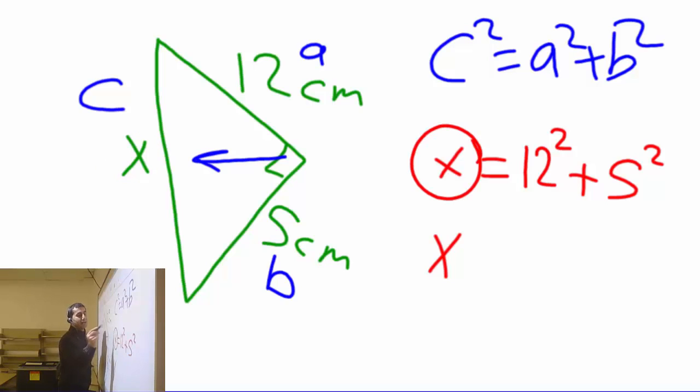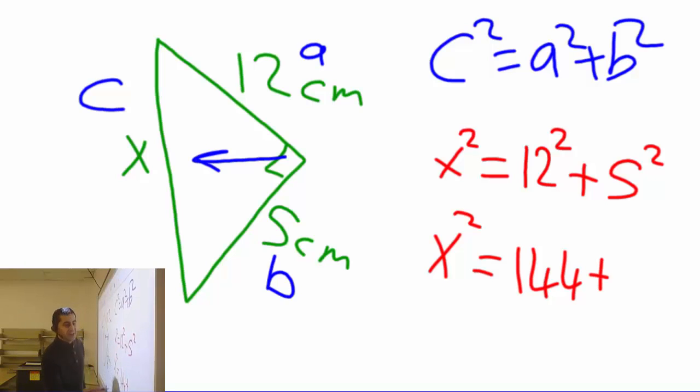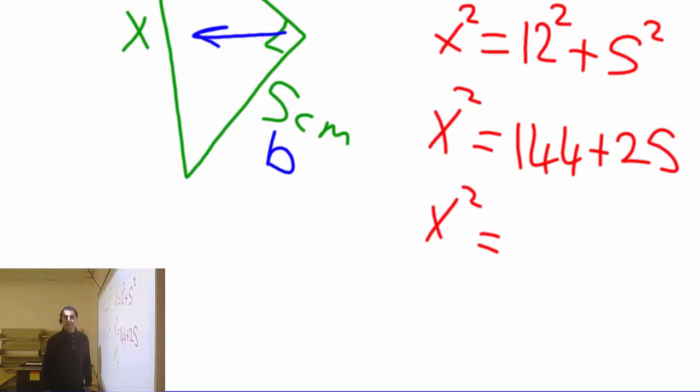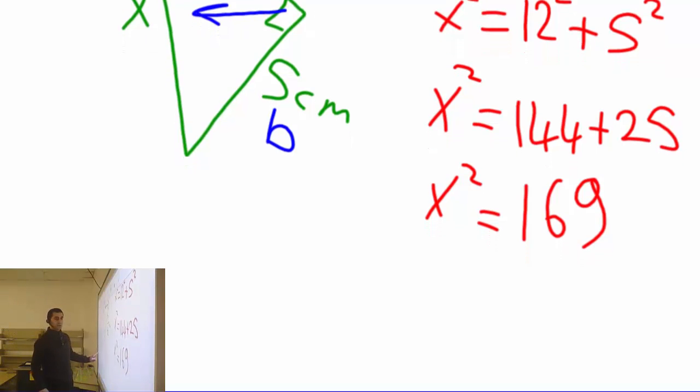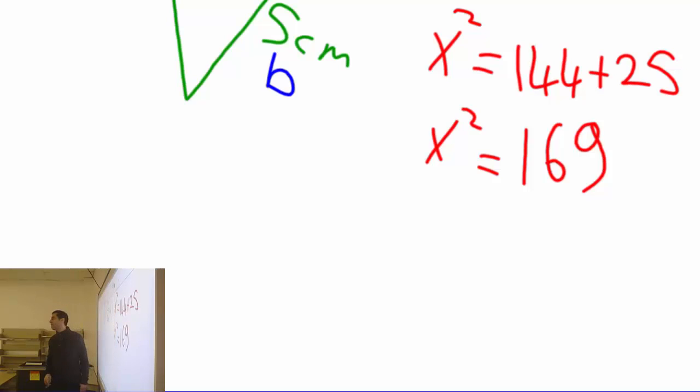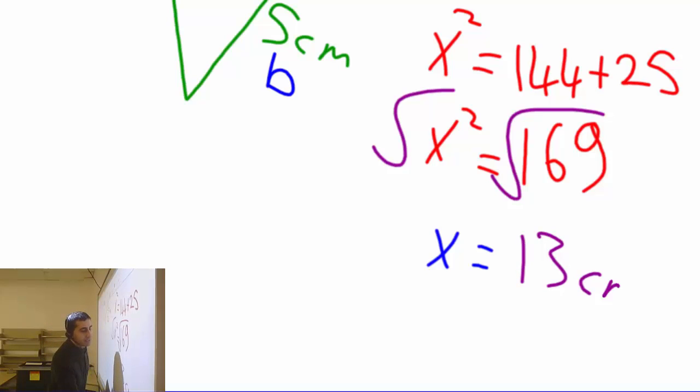I did forget the square here, you see. I wrote down X but I did not write down the square. So please don't do the mistake I just did. So anybody calculate, what is 12 squared? 144. 5 squared? 25. Okay, then somebody adds that. 169. And now remember, we are never, never, never ever interested in what's X squared. We are interested in what is X. To get that, take the square root from both sides. So what I have now? 13, and unit is centimeter.